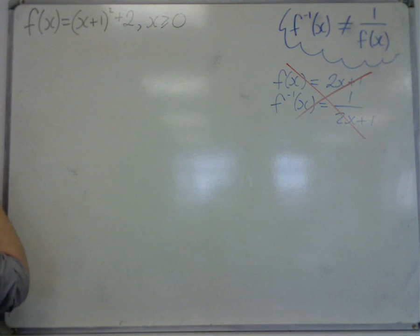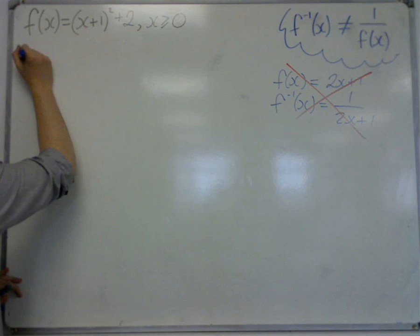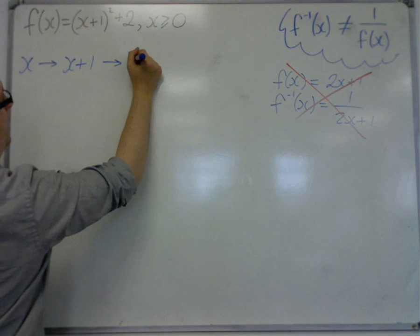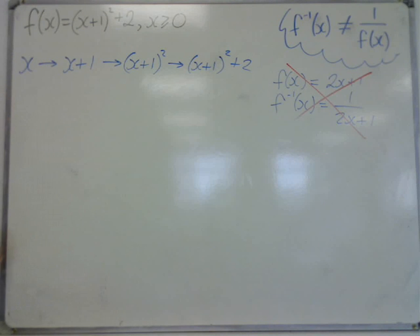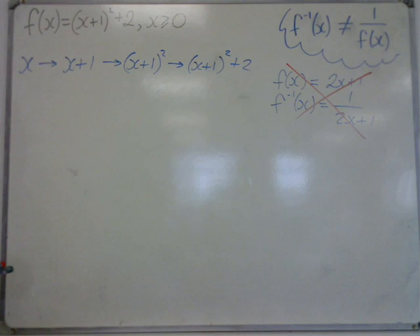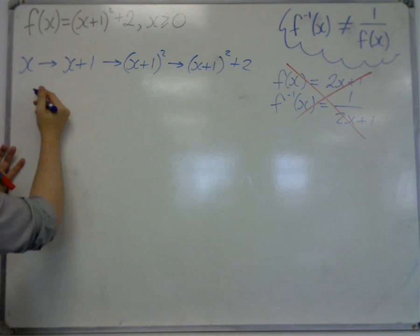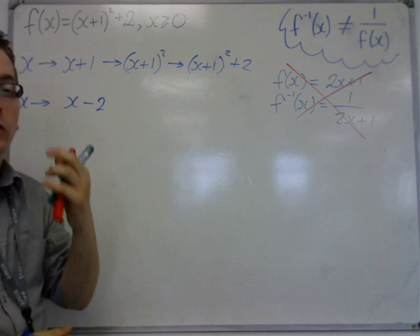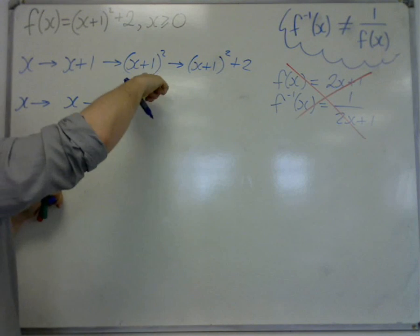Well, let's first think about this. What we want to do is we want to reverse the process. So first of all, if you start off with x, then I add 1 to it. Then I square it. And then I add 2. So this is the process that I currently run through when I put x into this. So I want to reverse the process.